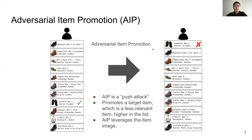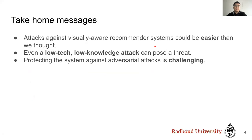The effect is also called item push. In this position, the user is more likely to click the item, although it's a less relevant item. Our attack promotes the item by leveraging the item image. We use adversarial images, but they are not the standard images from computer vision literature — rather they are created especially to deceive visually aware recommender systems. The take-home message: attacks against visually aware recommender systems could be easier than we thought, and even a low-knowledge attack can pose a threat. Protecting the system against this attack is very challenging.